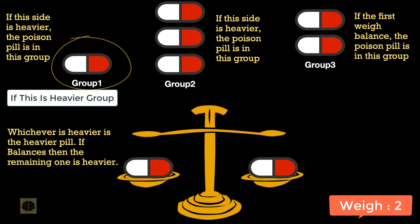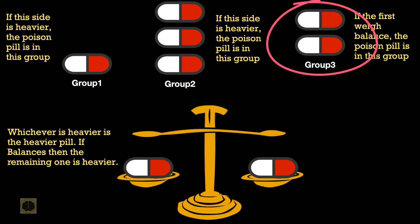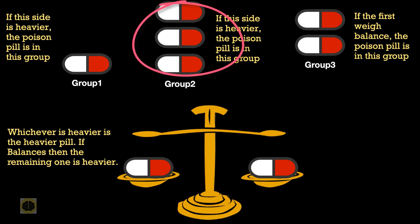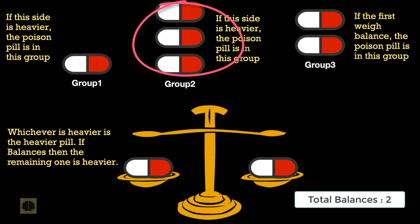To simplify: if the poisonous pill is in group 3, balance pill 7 against 8 — the heavier one is poisonous. If it's in group 1 or 2, balance one pill against another in that group. If they are the same, the one not weighed is poisonous; if different, the heavier one is. Only two weighings are required to find the poisonous pill.